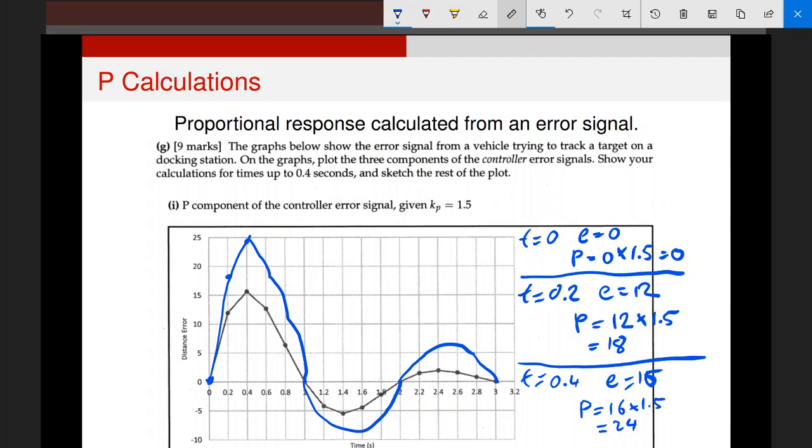Now, if my Kp, if it's above 1, then my proportional component will be larger than my error signal. If my Kp is below 1, then my proportional component will be lower than my error signal. But the general shape will always be the same.